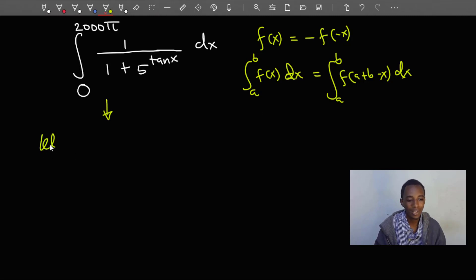I'm going to begin by letting this integral be called I. So let I be the integral from 0 to 2000π of 1 divided by 1 plus 5 to the power tan x dx. I'm going to apply this property here.